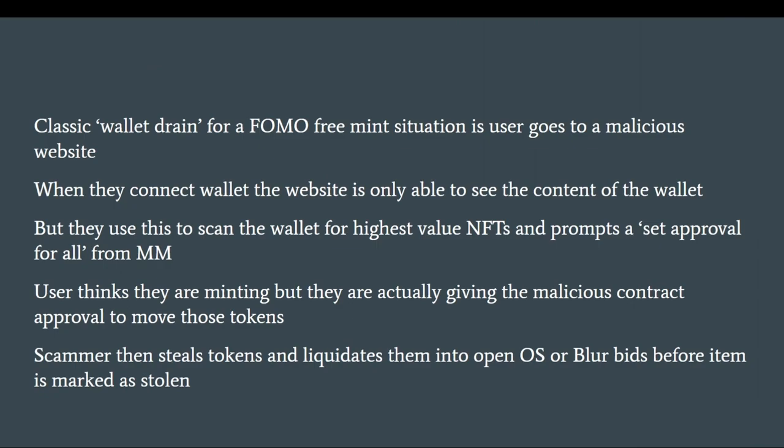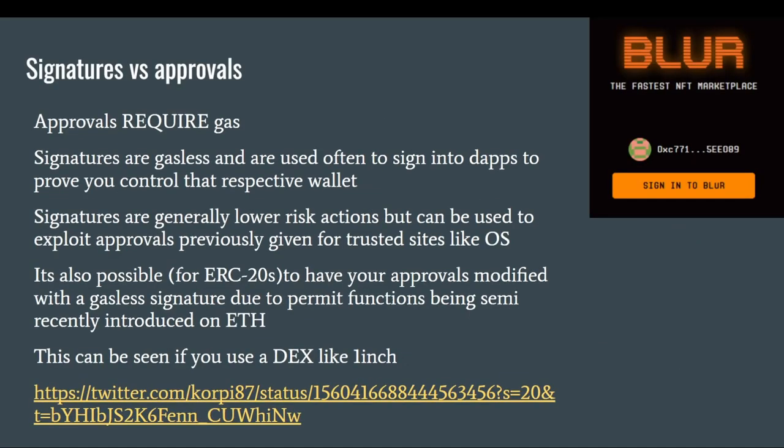The classic wallet drain for a FOMO free mint: the user goes to a site and connects their wallet. Connecting a wallet by itself is not dangerous — it just allows the website to see the contents of your wallet. What typically happens is a script scans for the most valuable items in your wallet and gets you to sign a setApprovalForAll for those tokens without you realizing it. The scammer then steals the tokens and liquidates them on OpenSea or Blur bids. OpenSea now has a policy where you have to wait an hour after buying something, so this is somewhat mitigated, but for the most part you're generally out of luck.